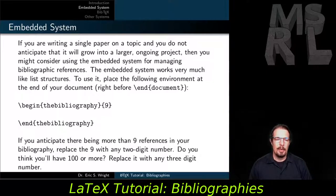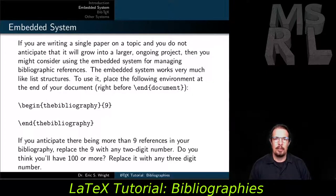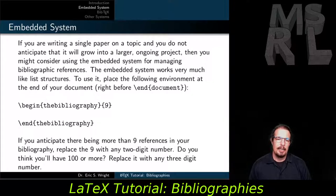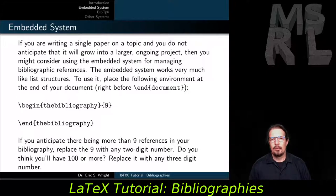What the nine is about: if you anticipate more than nine references in your bibliography, replace the nine with any two-digit number. Typically, I put in a 9, 99, or 999 depending on whether I'm thinking I'll have a single-digit, double-digit, or triple-digit number of references.